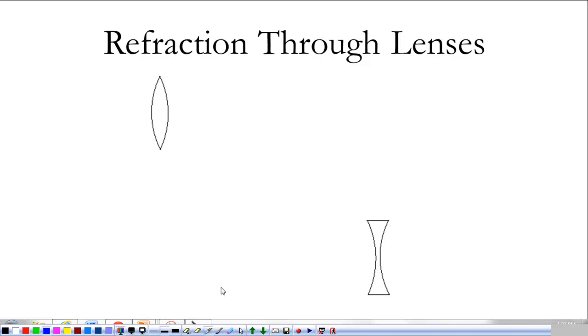So far we've talked about refraction through basically just an object, but it gets to be a little bit more useful when we talk about refraction through lenses. So we have two types of lenses. This one is a convex lens, and this is a concave lens.